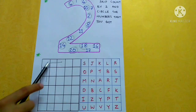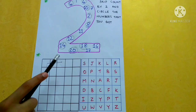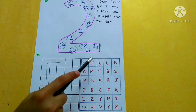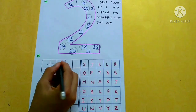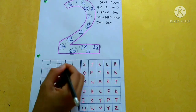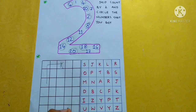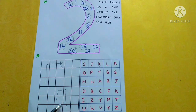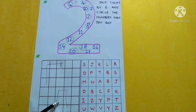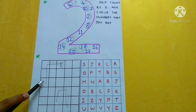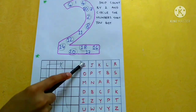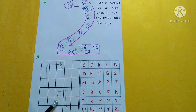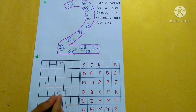Now, kids have to find out the letter where the path ends. This is where the path ends. 1, 2, 3 — so the letter is K. Now let's see another path. The path ends here, in the 4th column, 5th row, 3rd box — so the letter is S.